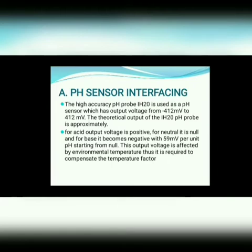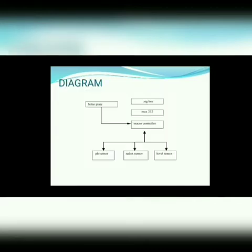The theoretical output of the IH-20 pH probe is approximately: for acid, the output voltage is positive; for neutral, it is null; and for base, it becomes negative — with 59 millivolts per unit pH starting from null. This is the circuit diagram for pH sensor interfacing.